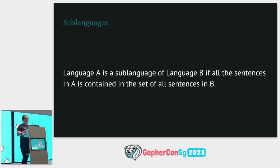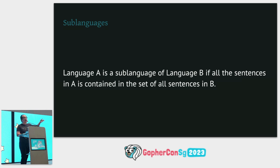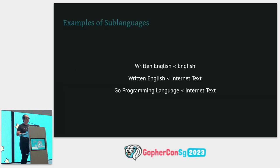The other way around would be a super-language. Singlish, for example, is a super-language because there are simply more Singlish sentences than there are English sentences. And yes, Singlish has a grammar — you cannot simply put 'la' anywhere in the middle of a sentence.